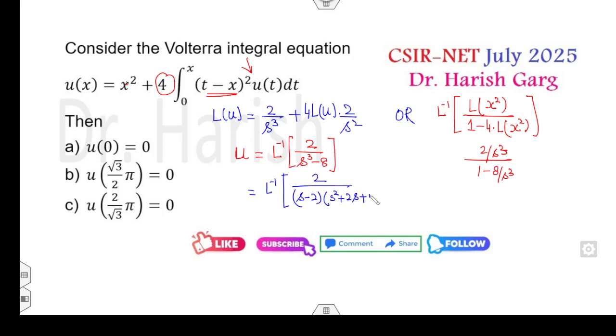I can use the shifting first theorem. Once you use the shifting first theorem, I can use e raised to power 2t outside, then I can replace everywhere s to be s plus 2. Or I can write this number as s plus 2 squared plus 2s plus 4 plus 4.